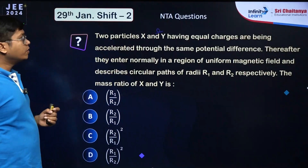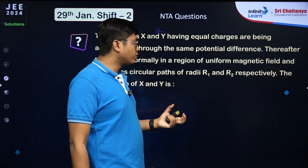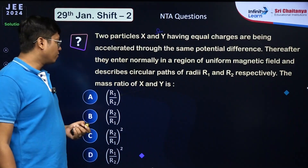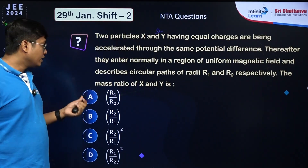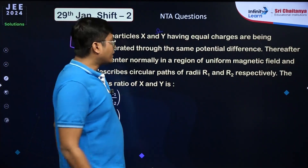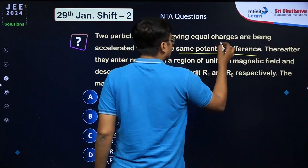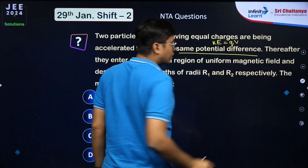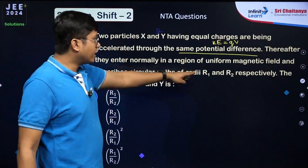The next question: two particles X and Y have equal charges, accelerated through the same potential difference, entering a uniform magnetic field and describing circular paths of radii r1 and r2. Find the ratio of their masses. Since they are accelerated through the same potential difference, they have the same kinetic energy, equal to qV.